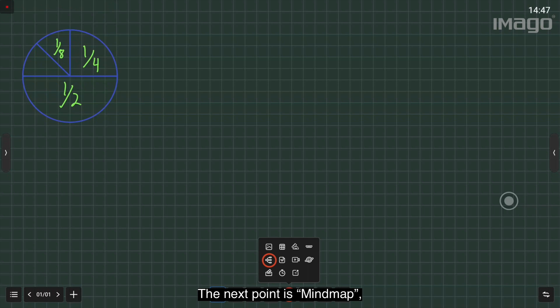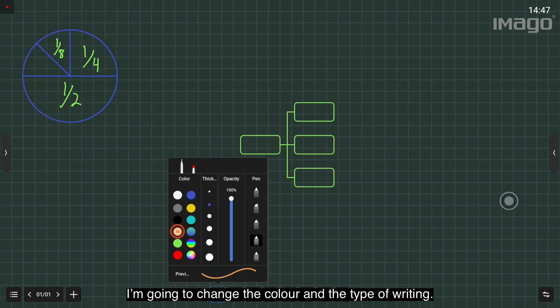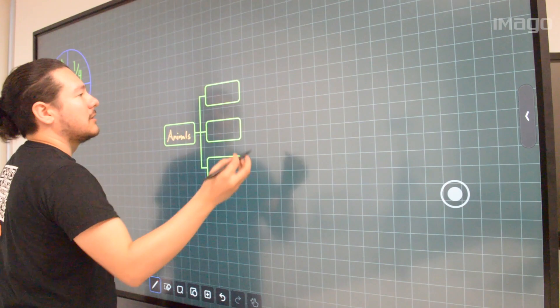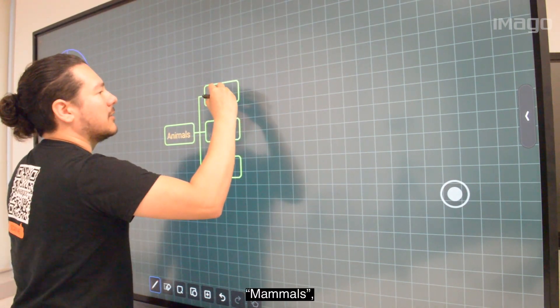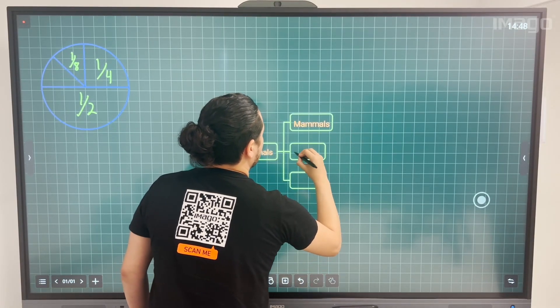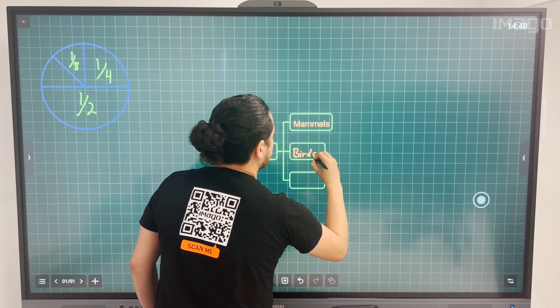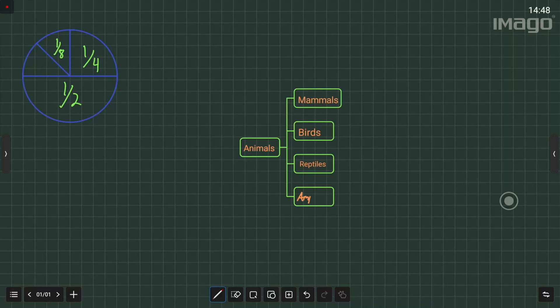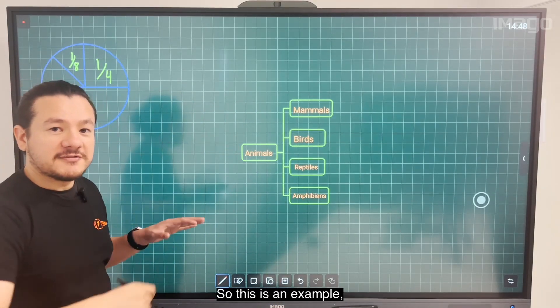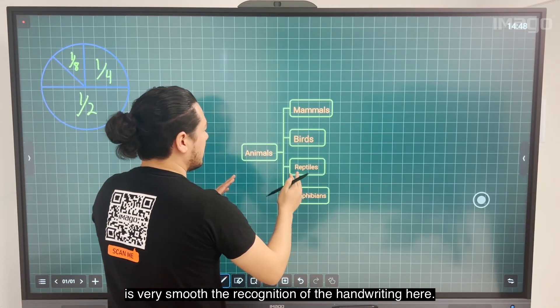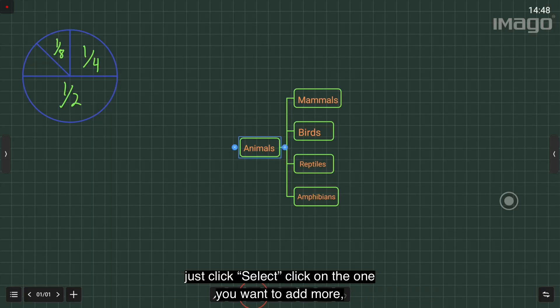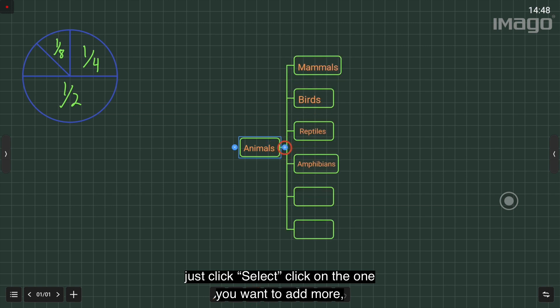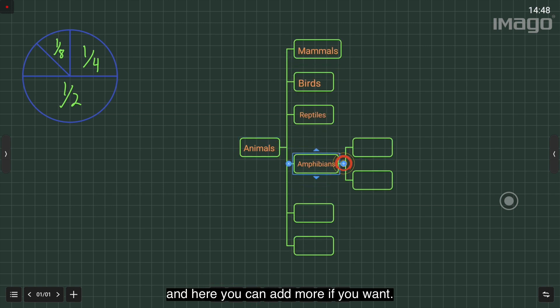The next point is Mind Map. I'm going to change the color and type of writing. Animals - Mammals, Birds, Reptiles. I click Select and I can add another one. This is an example - very smooth recognition of the handwriting here. You can add more by clicking Select, clicking on the one you want to add more to. You can also delete it by clicking this.